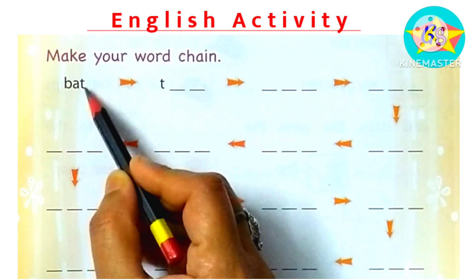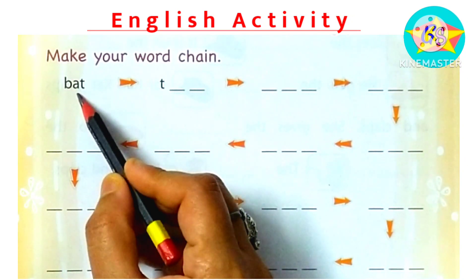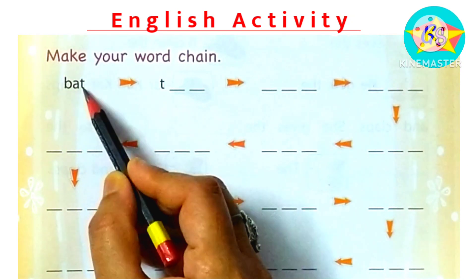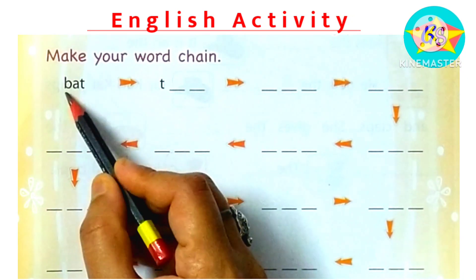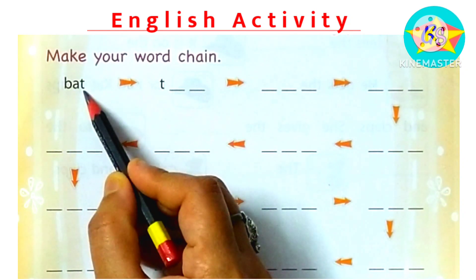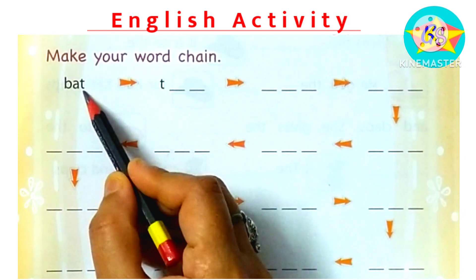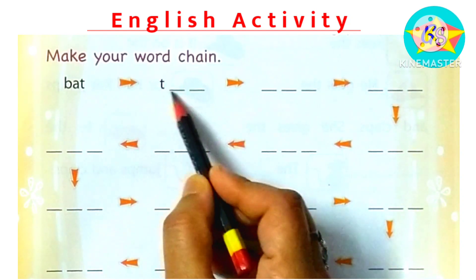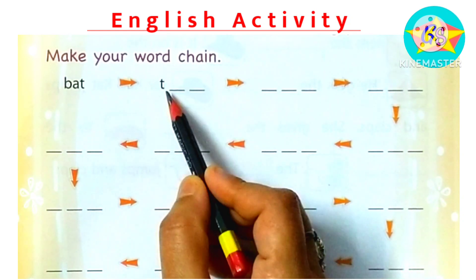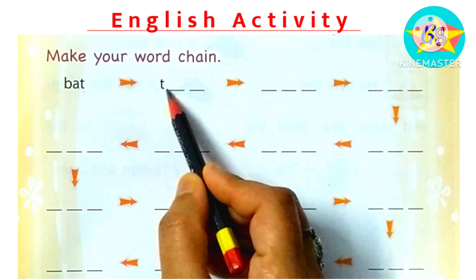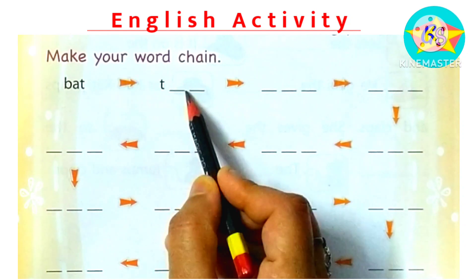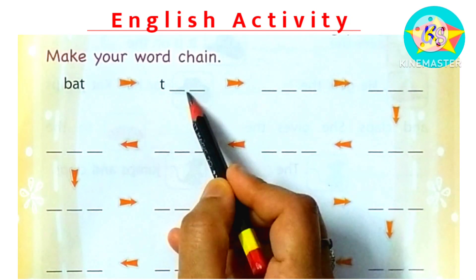As you can see, the first word is B-A-T, BAT. You can see this ending, it's called T letter. The next word we need to find out is T. You can see that ending from T.